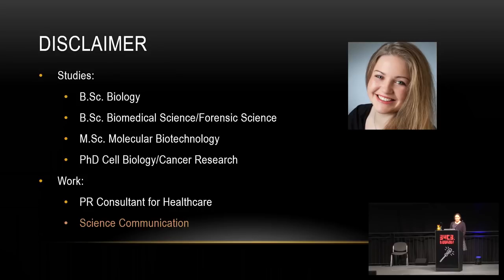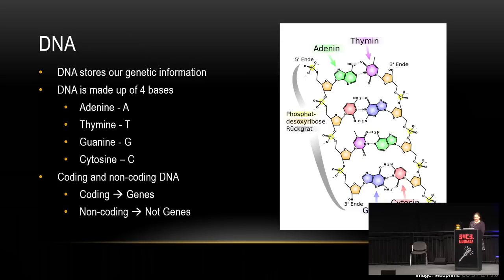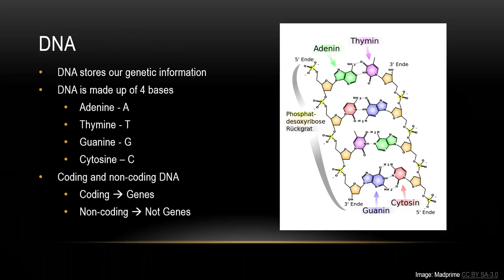Ich bin ein Biologe. Ich habe einen Bachelor in der Krebsforschung und mittlerweile bin ich ein Consultant und eine Wissenschaftskommunikatorin, was eigentlich nichts mit meinem Tagesberuf zu tun hat. Ich möchte über DNA reden. DNA speichert unsere biologischen Informationen, also unsere Daten. Es ist ein anderer Code, aus vier Basen gemacht: Adenin, Thymin, Guanin und Zytosin, kurz ATGC. Adenin ist immer mit Thymin verbunden und Guanin immer mit Zytosin.